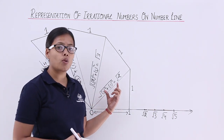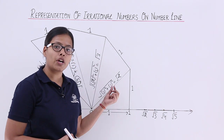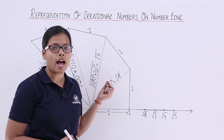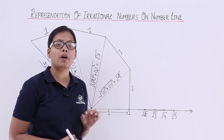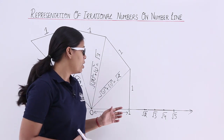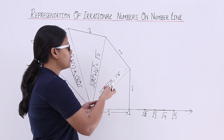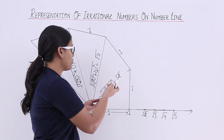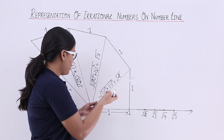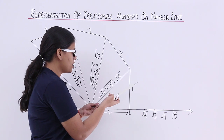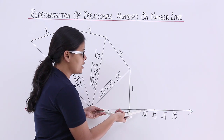So now you have to plot √2 on the number line. You already know √2 is an irrational number. To plot this number on the number line, use a compass — keep the compass here and open it to the length of √2. Then, keeping the compass fixed, you will mark the √2 point on the number line.